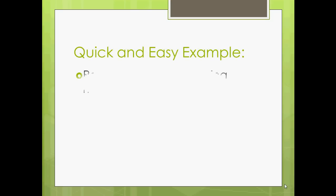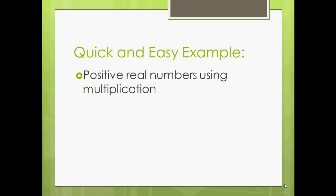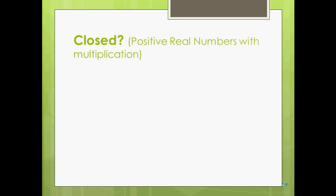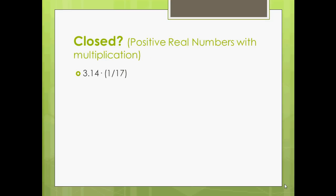First step is to check if it's closed. We're going to take the positive real numbers, and the operation we're going to be using is multiplication. Positive real numbers — here are some examples: pi is a positive real number, one-seventeenth is a positive real number, four gajillion is a positive real number. So when we take two positive real numbers and multiply them together, do we get another positive real number? In this case it's about 0.185, which is definitely a positive real number. So we're closed.